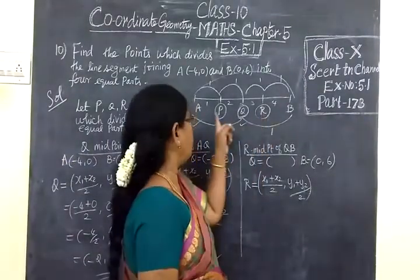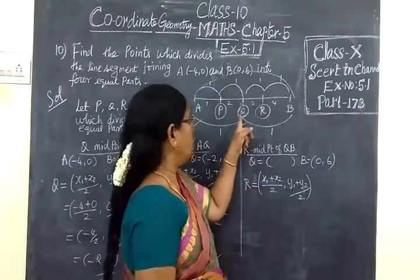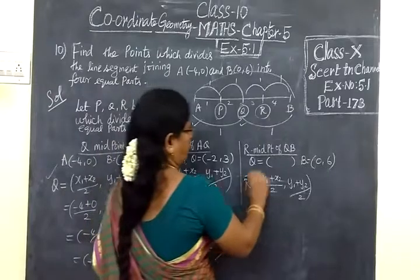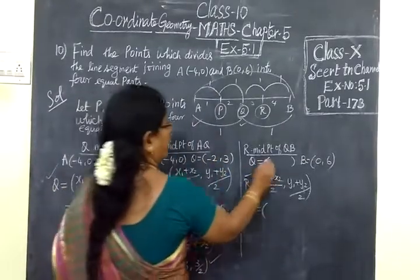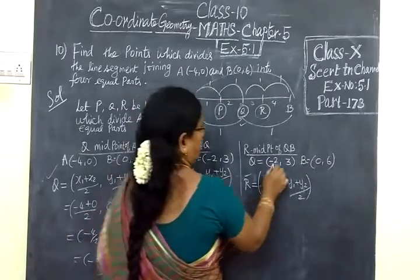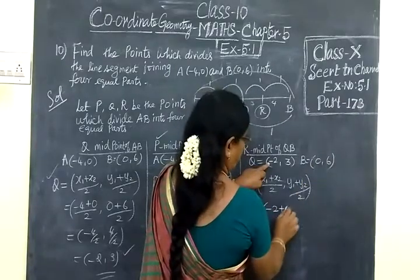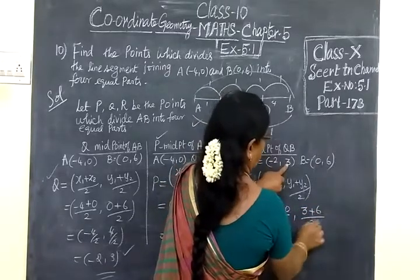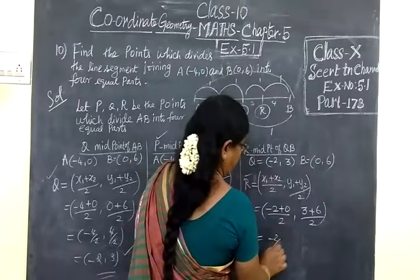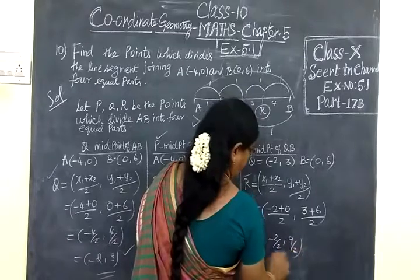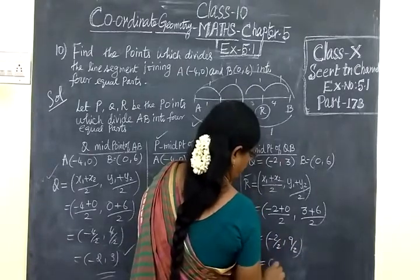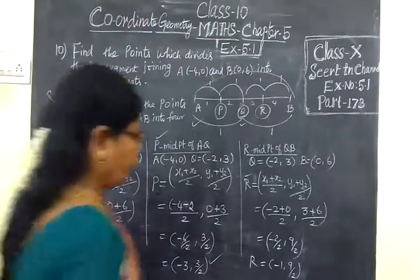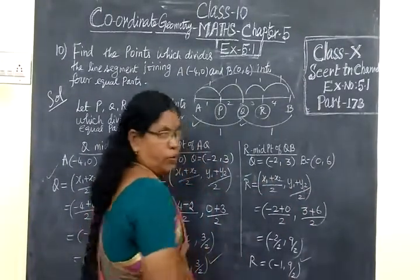Next we are going to find R. R is the midpoint of Q and B. Q value is minus 2, 3, plus X2 is 0, Y1 is 3, plus Y2 is 6 by 2. So R equals minus 1, 9 by 2. So this answer is also correct.